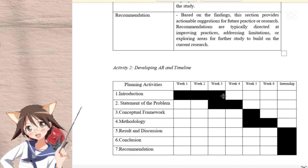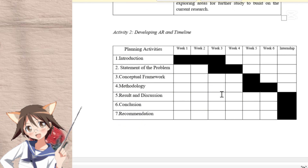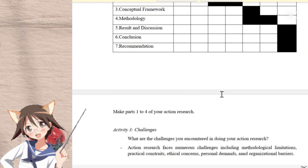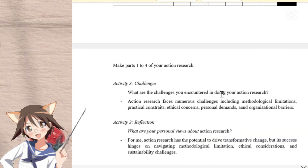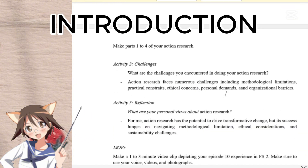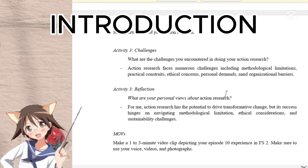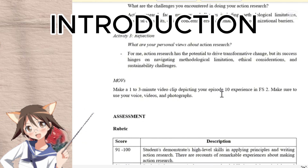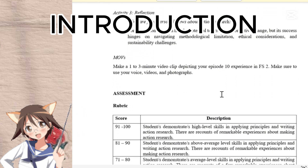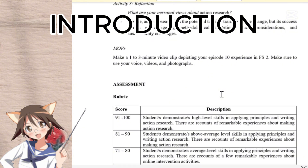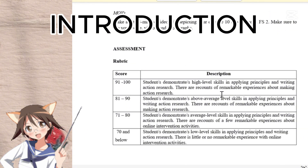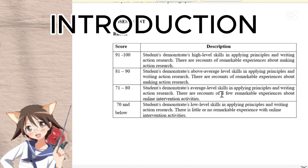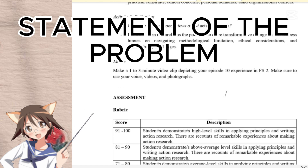Now that we understand what action research is, let's break down its key parts. First, the introduction. The introduction sets the stage. Here, we provide an overview of the research topic and explain why it is important. It's all about showing the relevance and potential impact of the study.